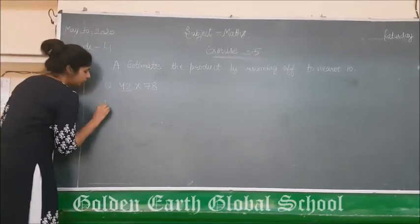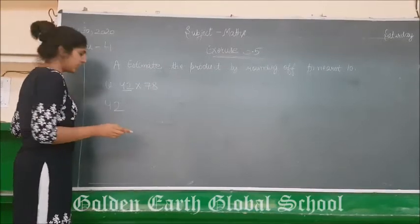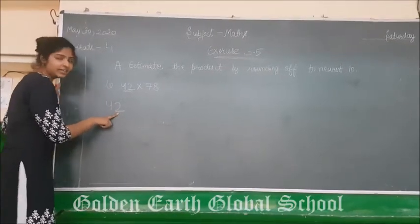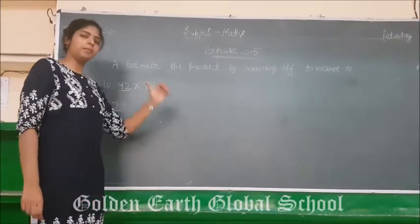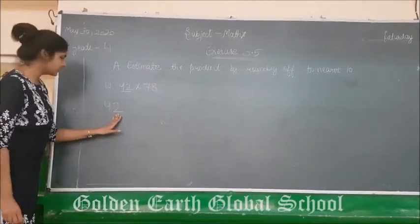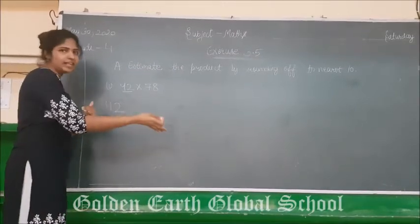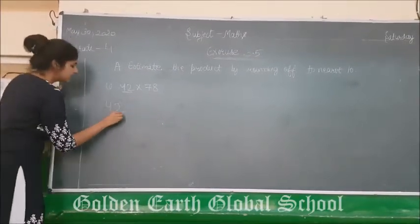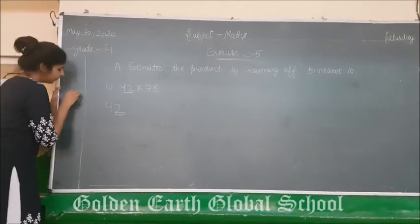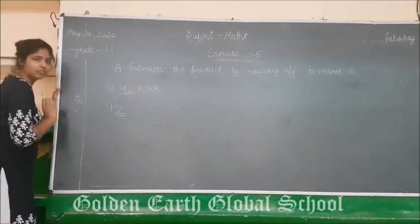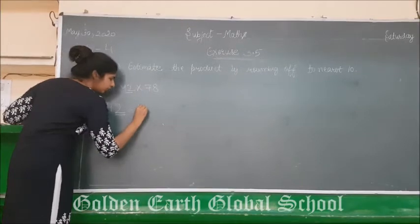So 42 rounded to the nearest 10 — what we have to check is the last digit. If the last digit is less than 5, then we will shift to the backward 10. If the last digit is greater than 5, we shift to the next 10. This is 2, and 2 is less than 5, so we shift to the backward 10. That is 40. So the nearest 10 of 42 is 40.